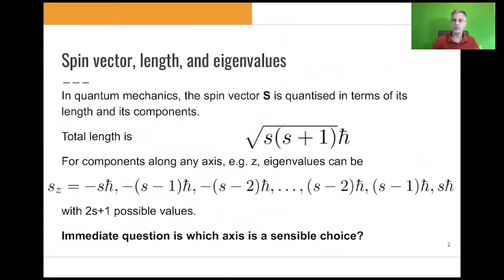In quantum mechanics, the spin of a particle is quantized in terms of its length and its components. If we calculate the length of the spin vector s, we find that it's square root of s times (s+1) in units of ℏ. The components along any axis, in this case the z-axis, have eigenvalues, and we find that there are 2s+1 possible values.